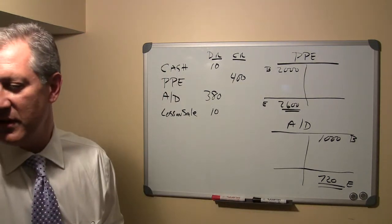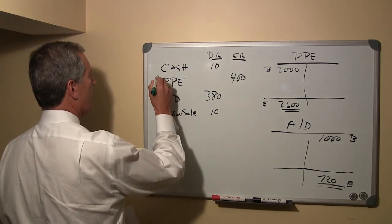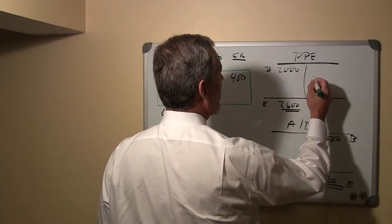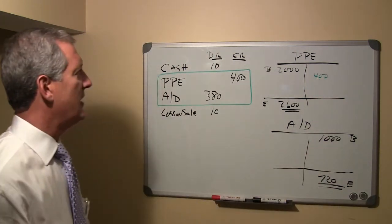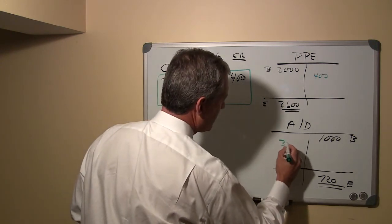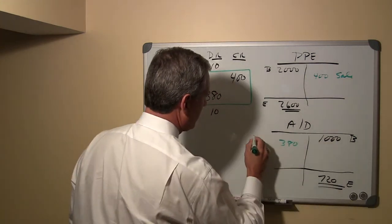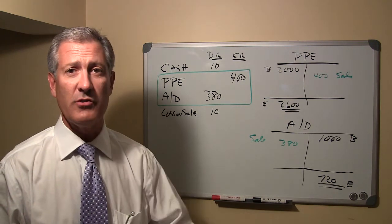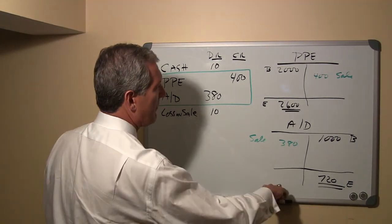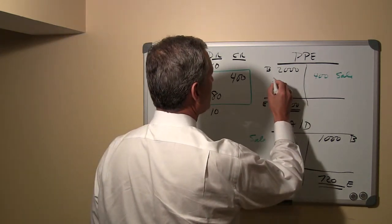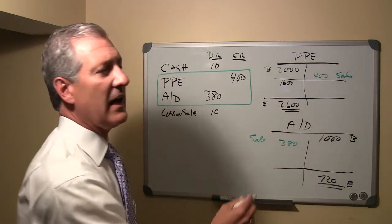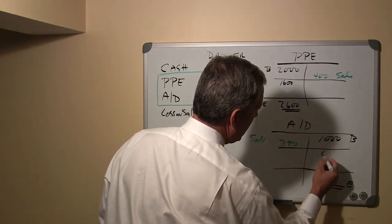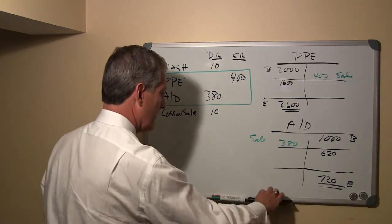We want to post the disposal transaction — specifically the credit to property, plant, and equipment for $400 and the debit to accumulated depreciation for $380, both representing the sale of the asset. That gives us a preliminary balance in property, plant, and equipment of $1,600 (the $2,000 debit minus the $400 credit), and a net credit of $620 in accumulated depreciation.